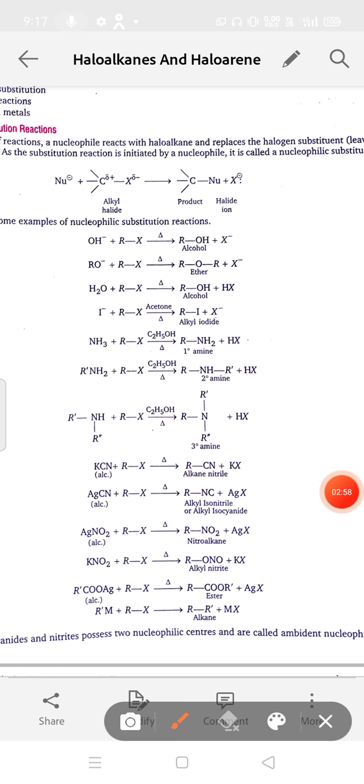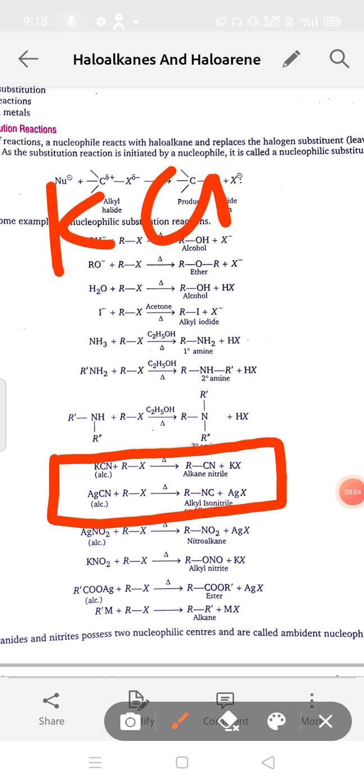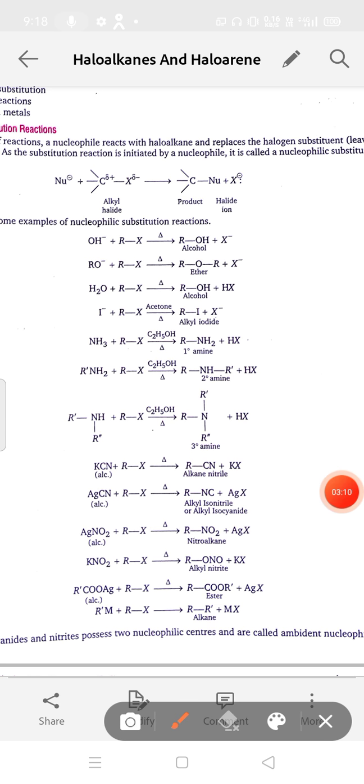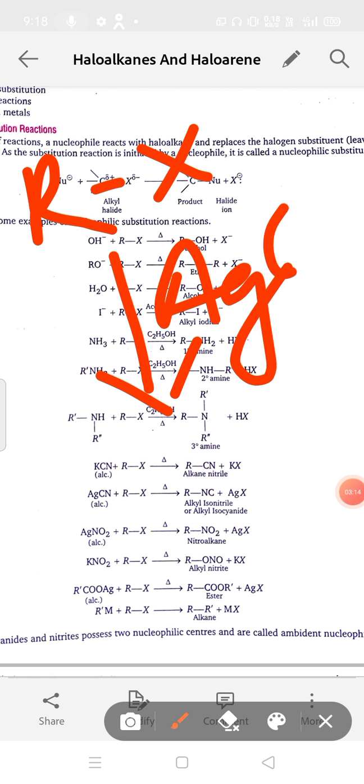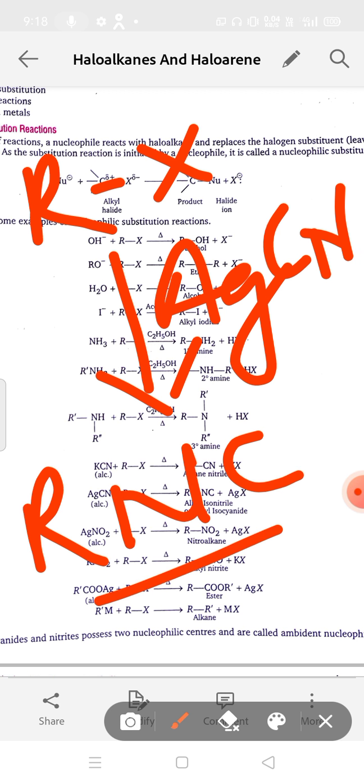Here is the exception case. The reaction is with KCN and AgCN. KCN, when you react with KCN, it forms a cyano group R-C-N, while when alkyl halide reacts with AgCN, silver cyanide, because silver is less reactive element, it forms R-N-C. Isocyanide will be formed. This is the exception case.